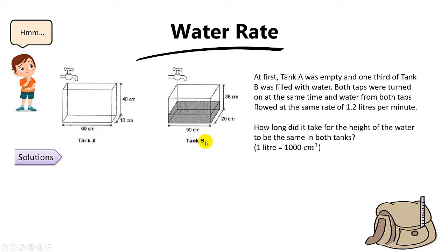Let's compare container A and container B. At first tank A is empty but tank B has some water, and now some water is going to flow in at the same time from both taps, and they want to find a time when the water levels are the same in both tanks. How do we know that the water will be the same after some time? The answer lies in their base area. The base area for A is 600, 60 times 10 is 600, while the base area of B is 1000, because 50 times 20 is 1000.